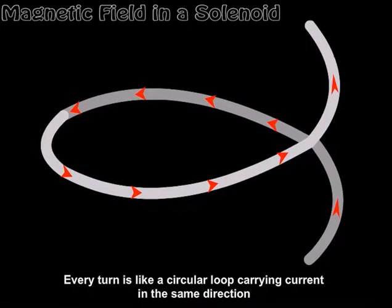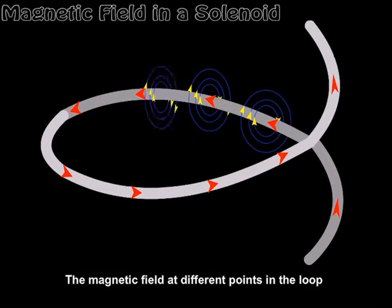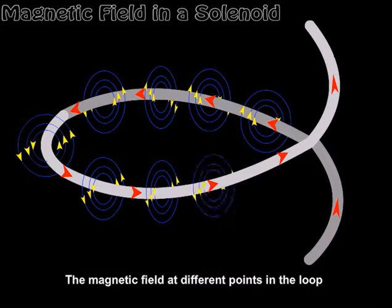In a solenoid, every turn is like a circular loop carrying current in the same direction.